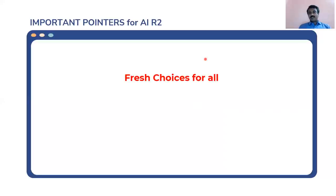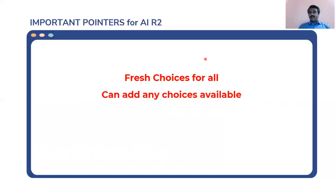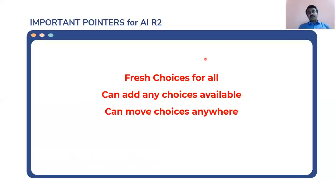First, some important pointers for All India Round 2. Fresh choices for all. Consent, unblocking, All India Round 1 seat status — whether free exit, joined and resigned, was not allotted, or holding a state or own seat — doesn't matter. Fresh choices for all. You will see a blank choice list and will have to start adding choices. Your Round 1 choices will not be reflecting there when you log in. You'll be able to add any choice available for your category and the quotas you have registered for. Where you placed that choice in your All India Round 1 list, or whether you were allotted it and did not join, doesn't matter. You can move choices anywhere — it is a fresh choice list.